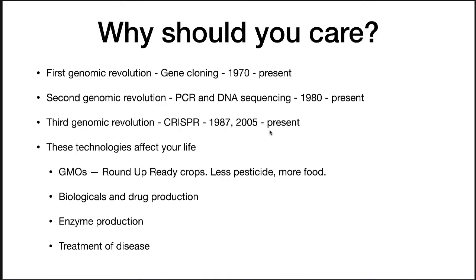First of all, why should you care? Bacterial genetics and genomics has had a profound impact on your life, even if you didn't know it. The first genomic revolution came with the discovery of the central dogma and the realization that we could clone useful genes from any source and make as much DNA and protein as we wanted from them. This resulted in the ability to engineer plasmids and digest them, but it was still a clunky and slow process and it took a lot of work to get any gene cloned and expressed.